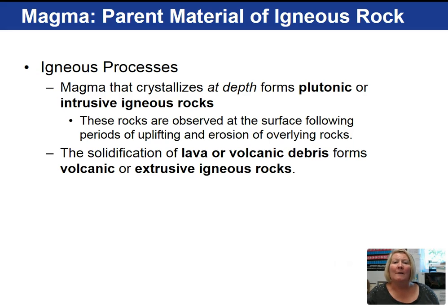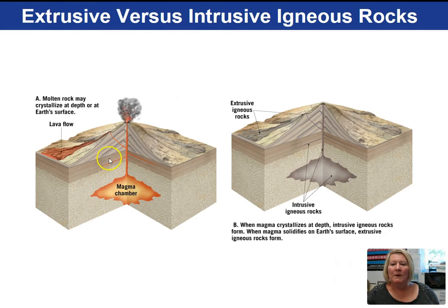We then have an exposure of the plutonic structure. The solidification of lava forms volcanic or extrusive igneous rocks. Summarizing: we have plutonic or intrusive igneous rocks cooling within the Earth, and lava or volcanic debris that solidifies at the Earth's surface — we refer to those as volcanic or extrusive igneous rocks. This image shows magma within the Earth, intrusive, and extruding out onto the Earth's surface in a lava flow, producing intrusive and extrusive igneous rocks.